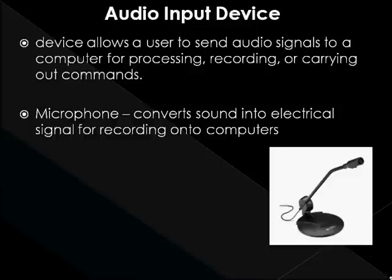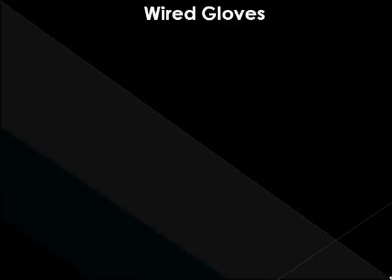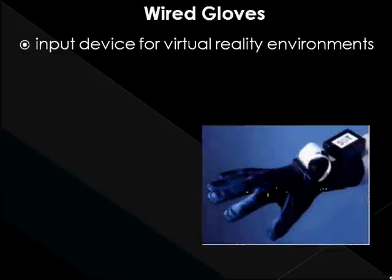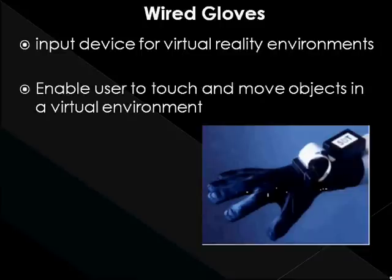A wired glove is a glove-like input device for virtual reality environments. Various sensor technologies are used to capture physical data such as bending of fingers. The gloves detect the movement of the hands, enabling the user to touch and move objects in a virtual environment. By using them, users can interact more realistically with virtual environments than when using a joystick, mouse, trackball, or similar device.